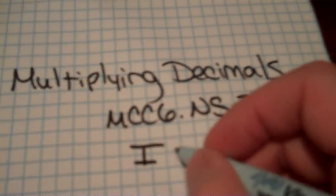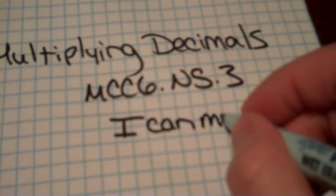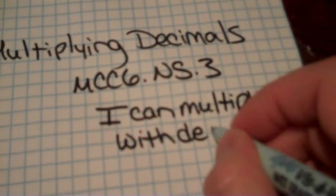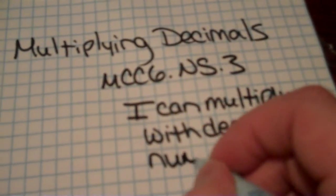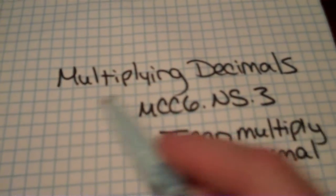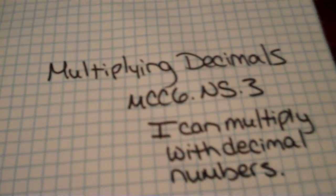Okay so together, I can multiply with decimal numbers. Right now you should have title, multiplying decimals, your standard, and your I can statement on your paper.